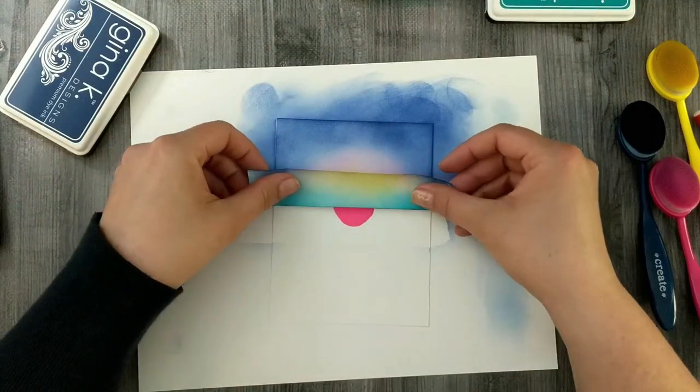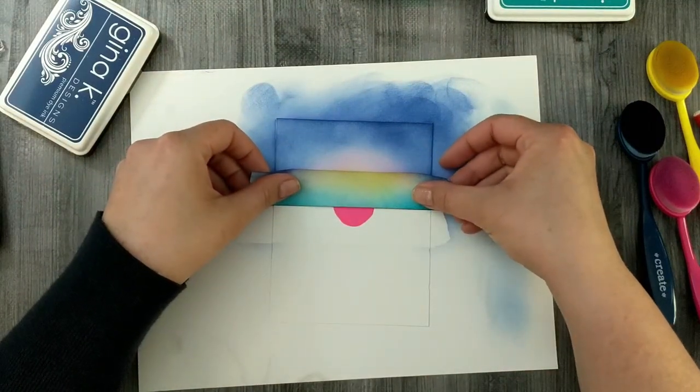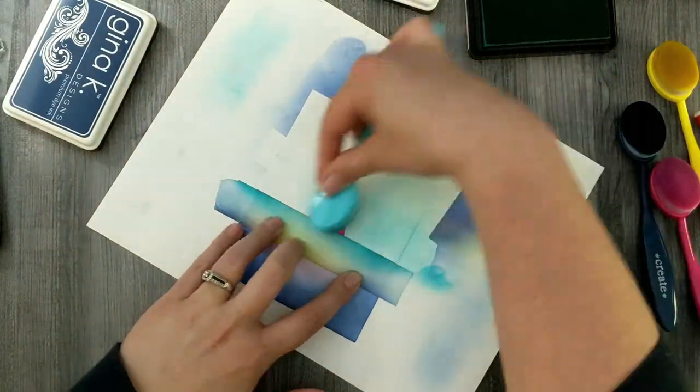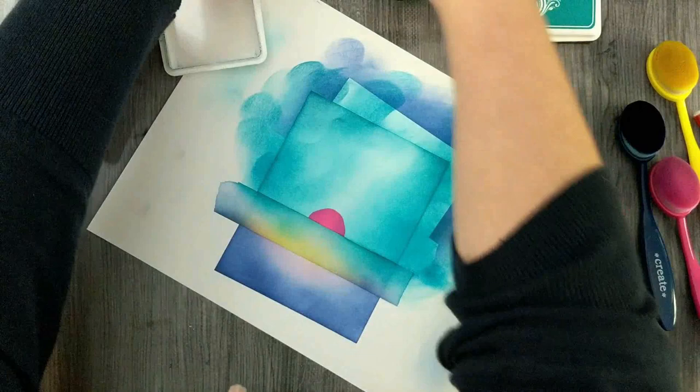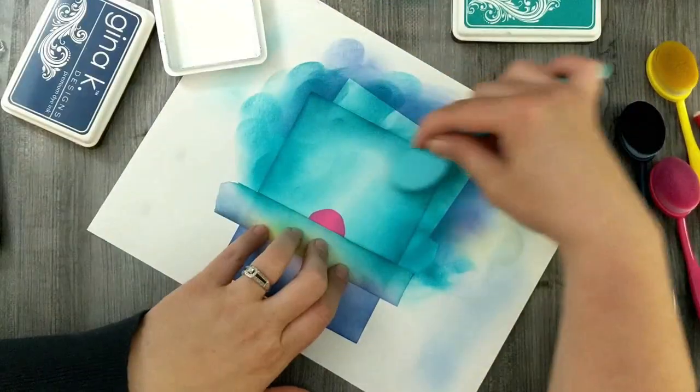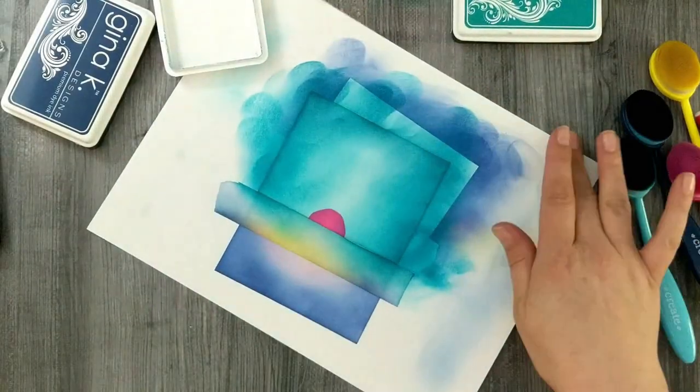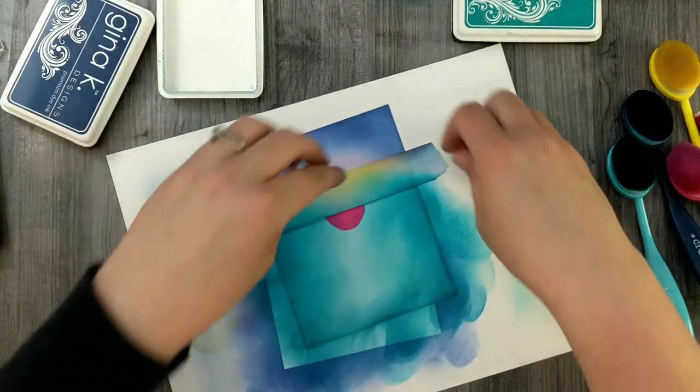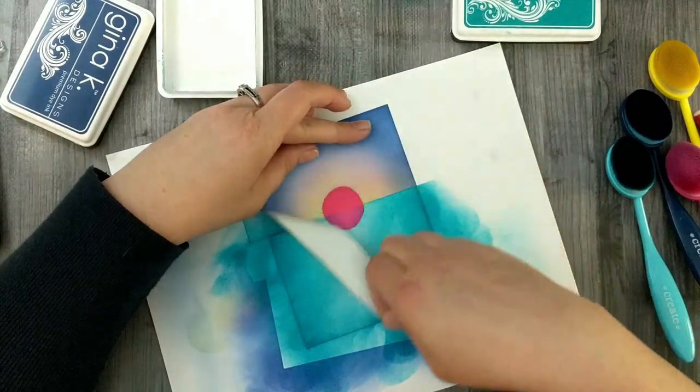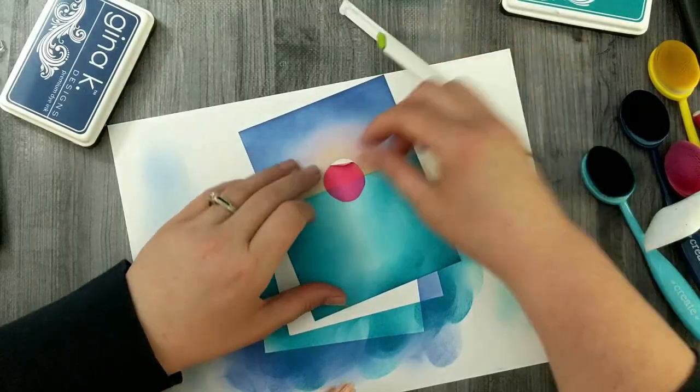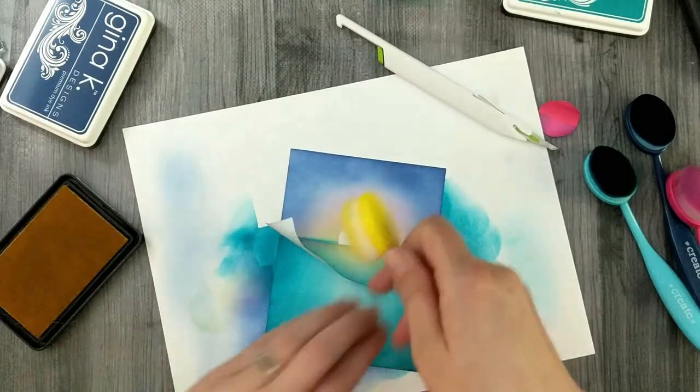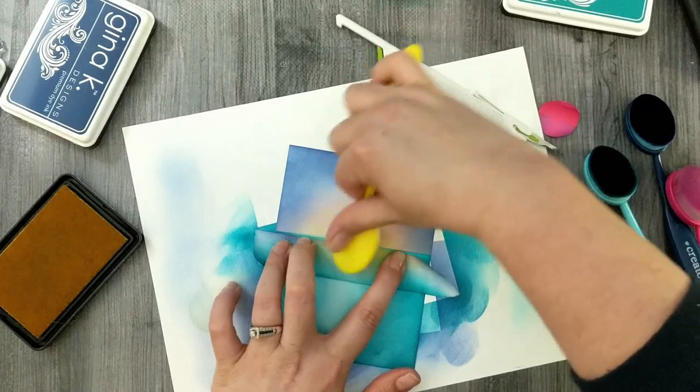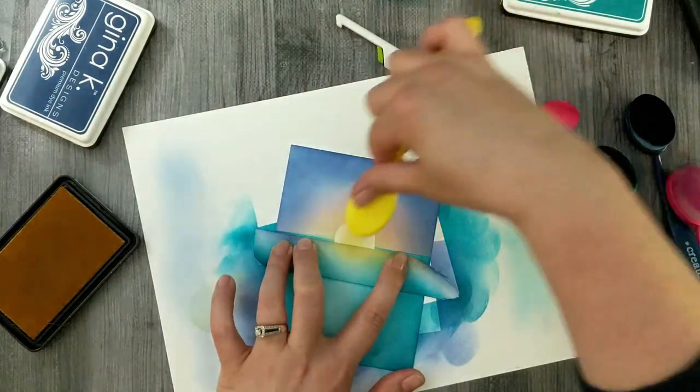When I peel up that post-it tape, you get a crisp clean horizon line that we're going to switch over to create an ocean on the other side. I'm going to ink with blue lagoon ink and tranquil teal, and then I make sure I create a white space sort of where my sun would be casting a shadow across the water, so I don't blend too dark in the center there.